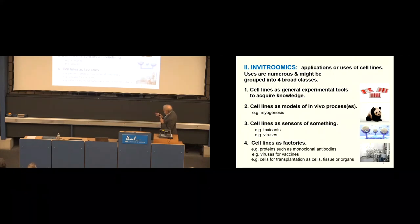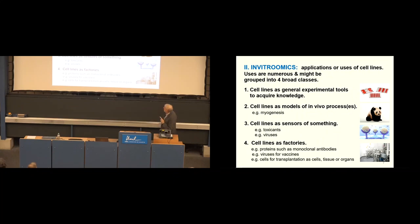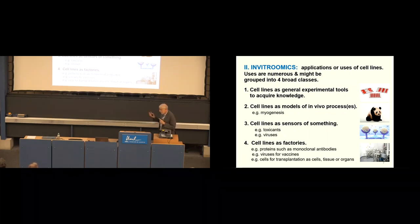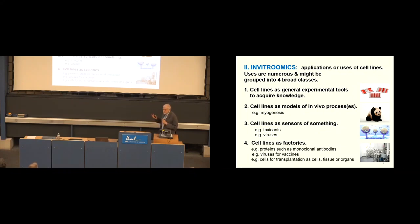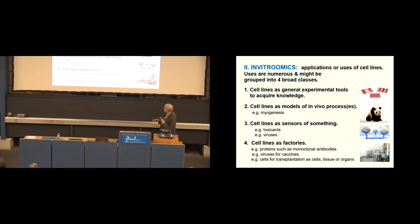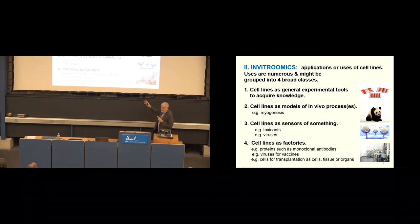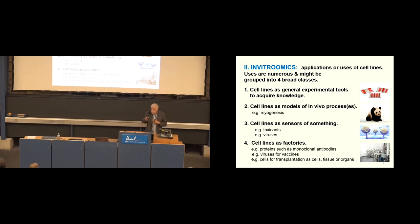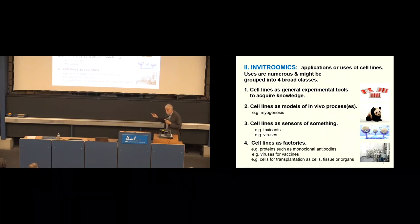Now we go to invitromics, the applications or uses of cell lines. And I've given four broad categories. Cell lines as general experimental tools to acquire knowledge, that can be basic knowledge, applied knowledge, whatever. Cell lines as models of some in vivo process, for example tumors or myogenesis. And cell lines as sensors of something, like a toxicant or viruses. And then, as we've heard just now, cell lines as factories. So, proteins such as monoclonal antibodies, viruses for vaccines, cells for transplantation as cells, tissues, or organs. And I almost forgot, my lovely wife would want me to point out, cell lines to eat. So the in vitro meat is part of cell lines now.